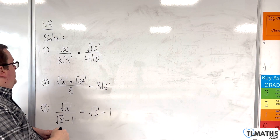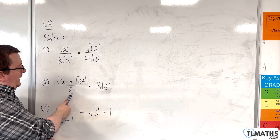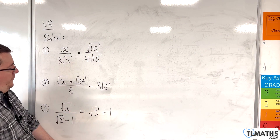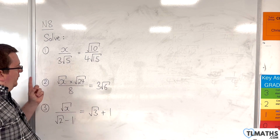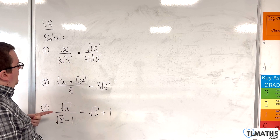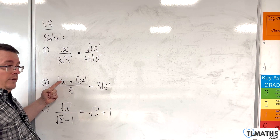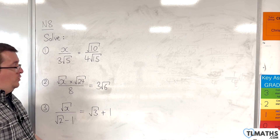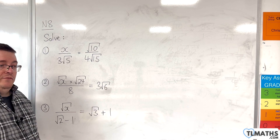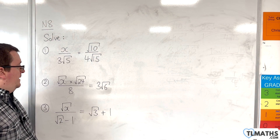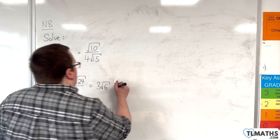Number 2: we have the square root of x times the square root of 24 over 8 is equal to 3√6. One thing to note before we start — because we've got √x, x is going to have to be a positive number. That's the constraint here because we're square rooting it.